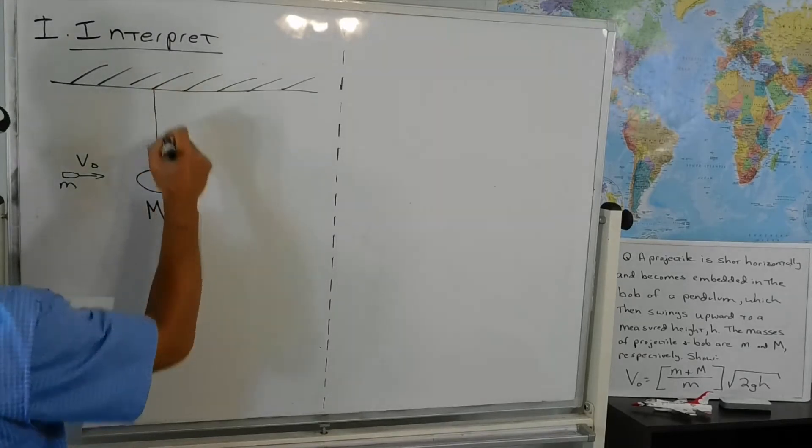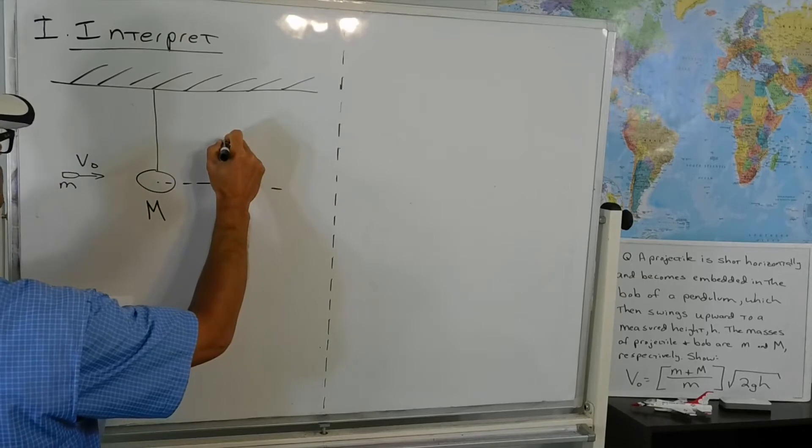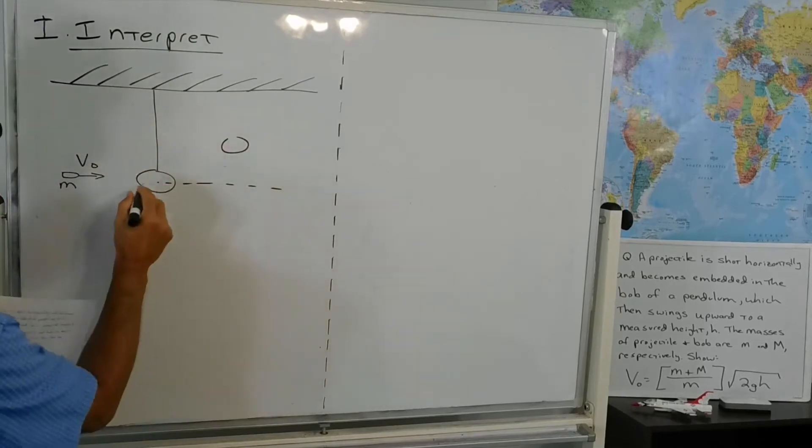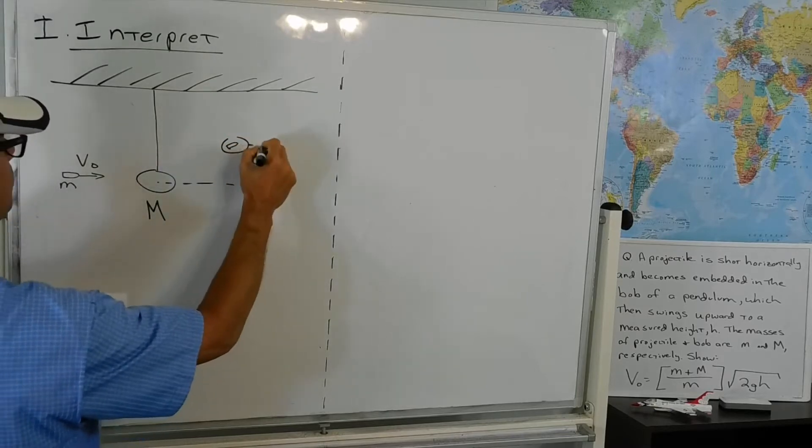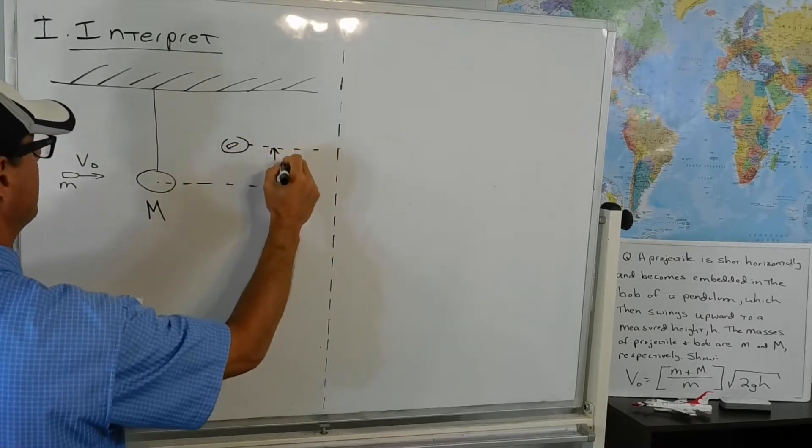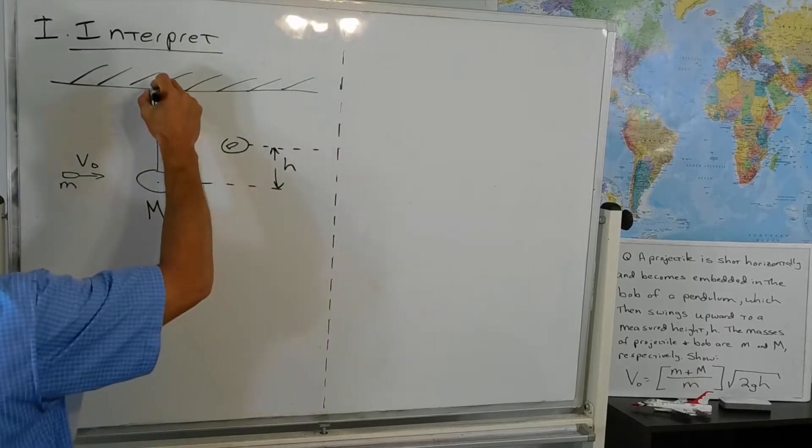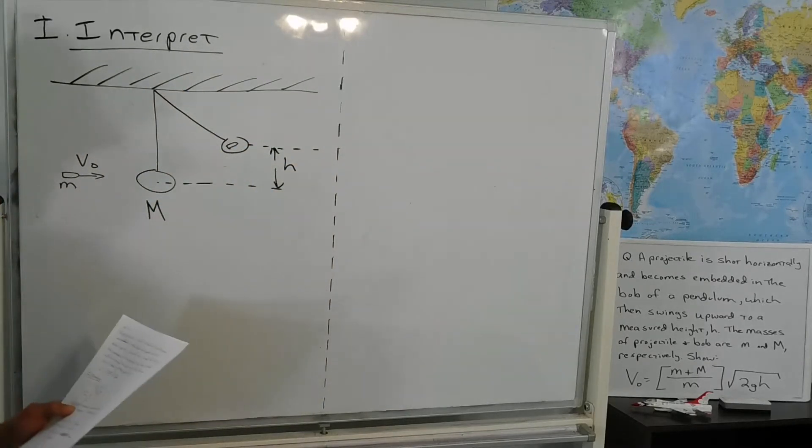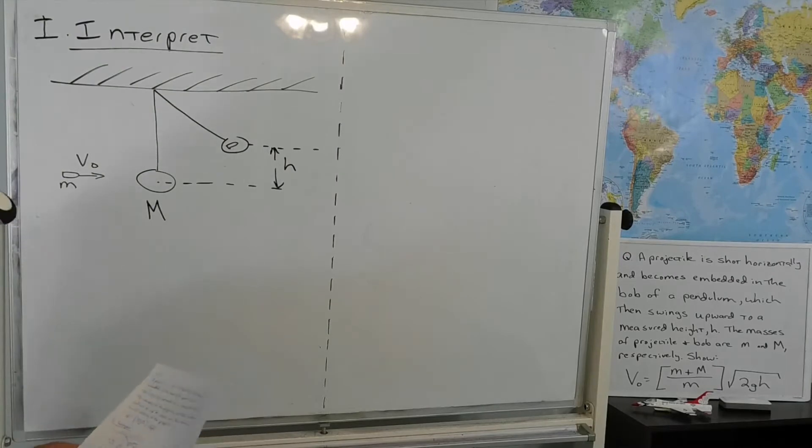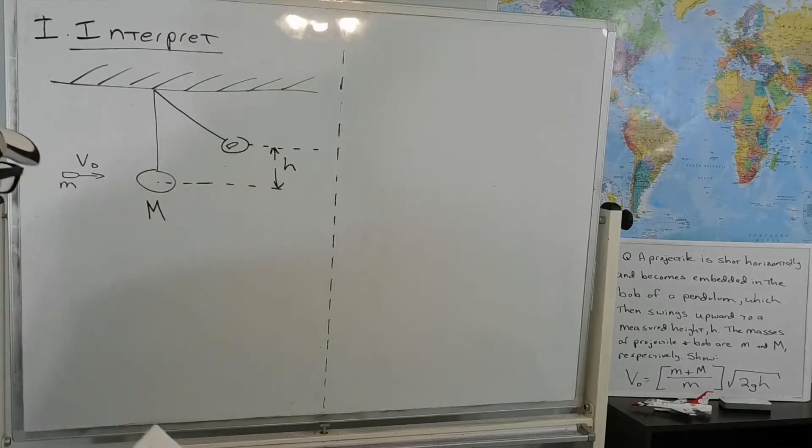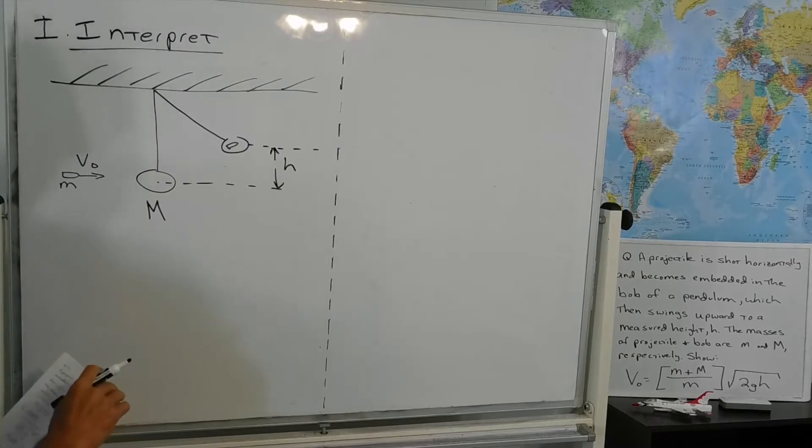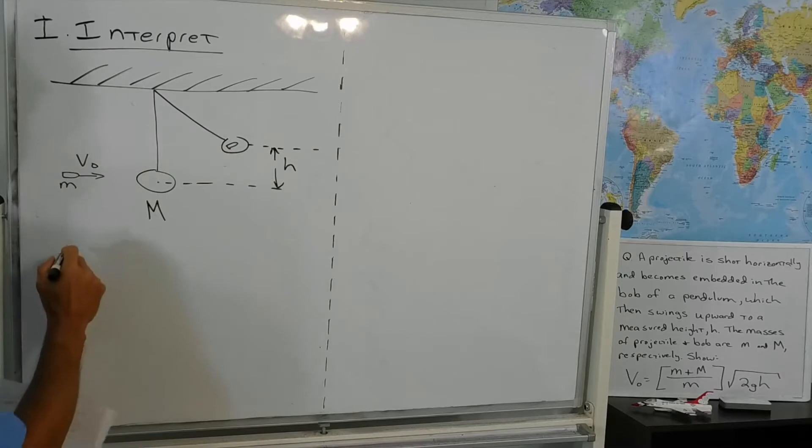V zero or V naught is the projectile velocity before impact with the pendulum. It impacts with the pendulum and then the pendulum is going to swing upward. There's a collision. The bullet becomes embedded in the pendulum bob. It swings upward to some height, h. And so the h is measured, the masses are known, and from a little math and a little physics, we can infer the initial velocity of the projectile from the height to which it swings and the masses.